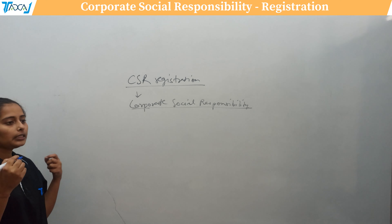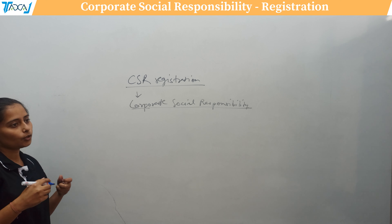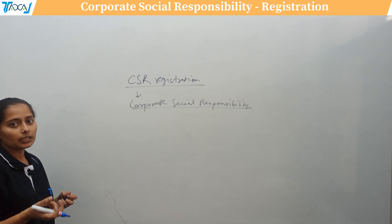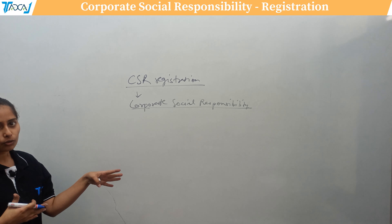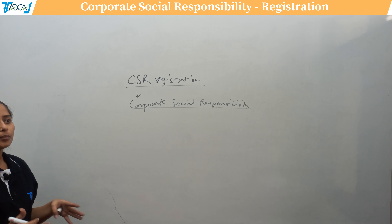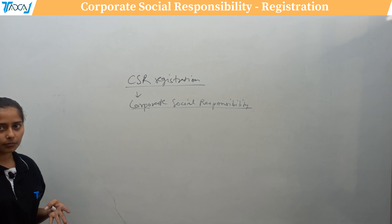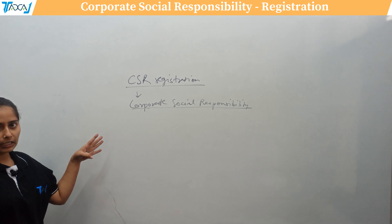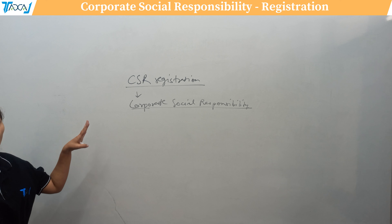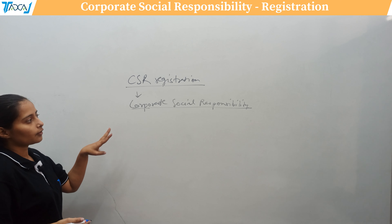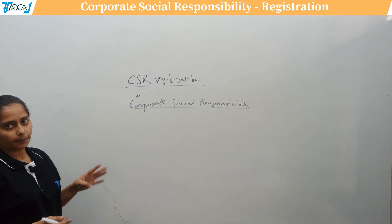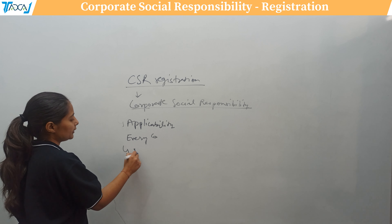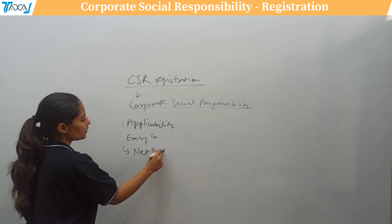For this expenditure, a company can either create its own registered trust or Section 8 company and conduct CSR activities through it, or it can approach an existing NGO already working in this space, fund them, and have them carry out CSR activities on its behalf. The applicability is determined on the basis of net profit.